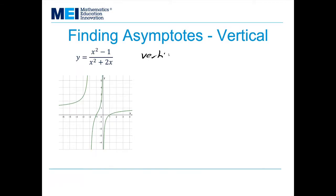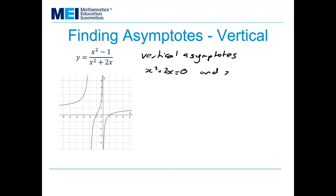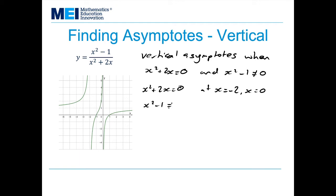Vertical asymptotes appear when the numerator is non-zero and the denominator is 0. So x squared plus 2x equals 0 and x squared minus 1 is not equal to 0. Checking where x squared plus 2x equals 0 gives x equals negative 2 and x equals 0. I need to check that x squared minus 1 is non-zero at both of those places, and it is non-zero. Hence, x equals negative 2 and x equals 0 are vertical asymptotes.